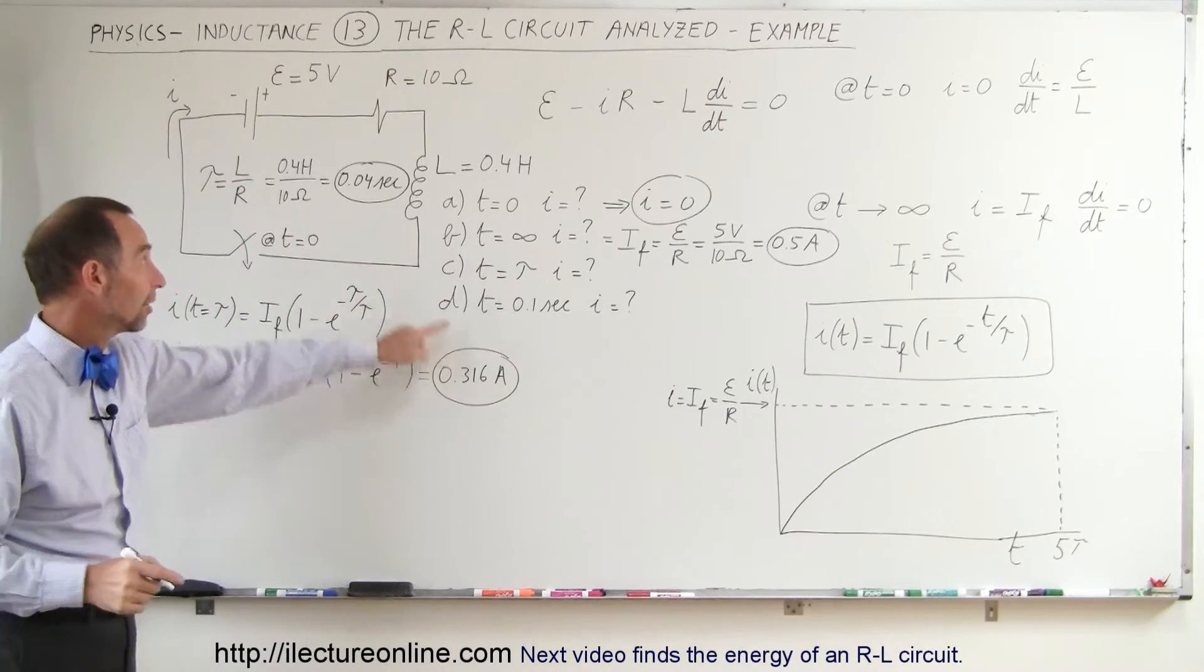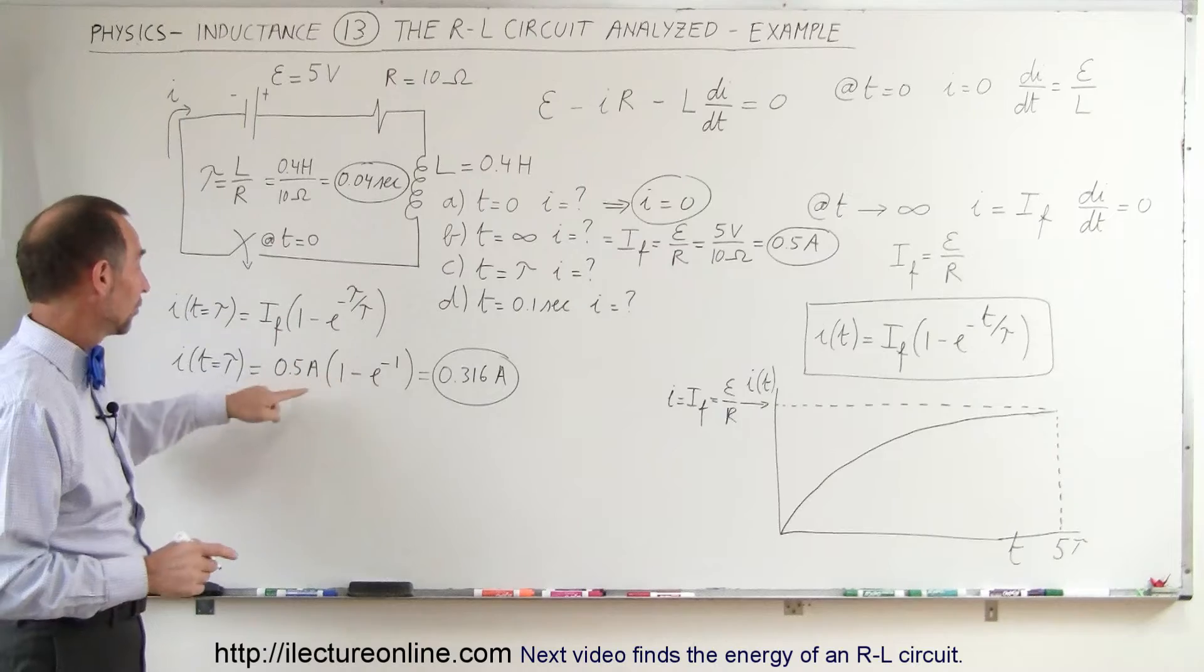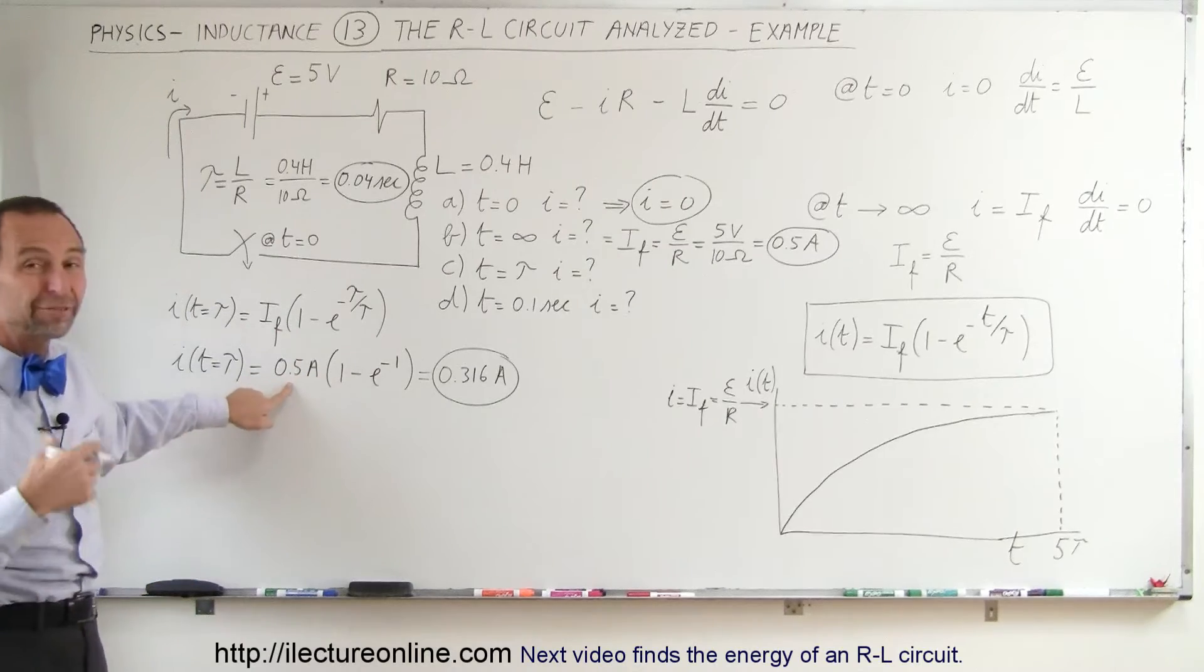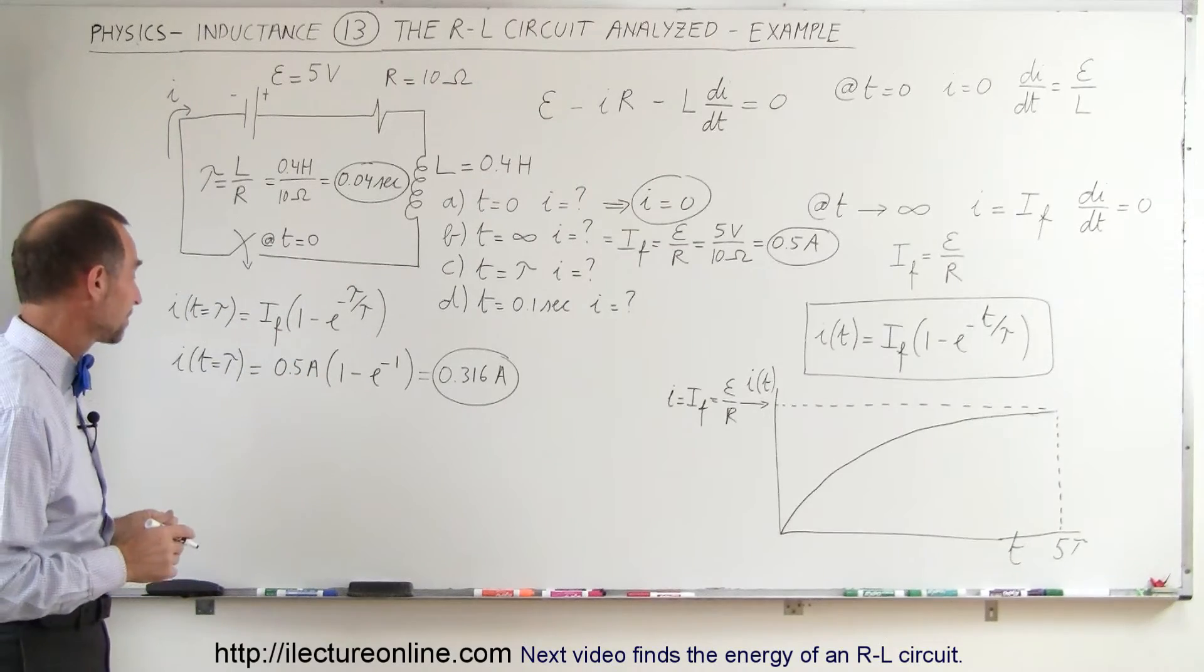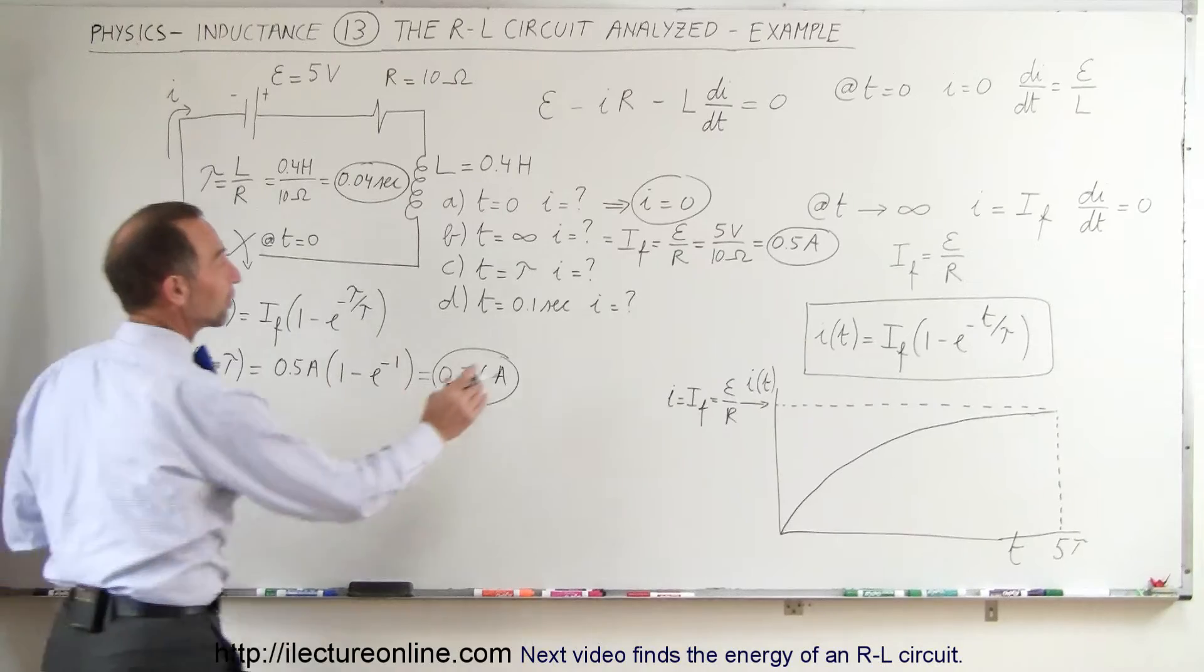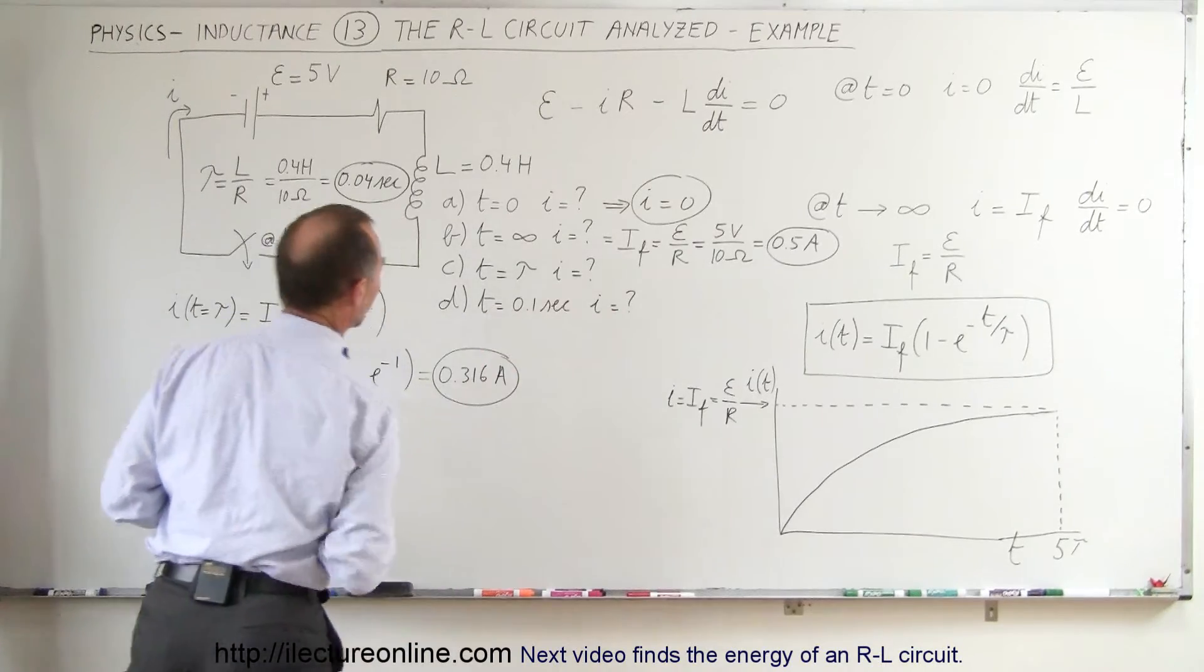So that would be the current after one time constant. Notice, after one time constant, after 0.04 seconds, the final, the current has already reached more than 50% of its final value. All right, finally, we want to find the current when time is equal to 0.1 seconds.